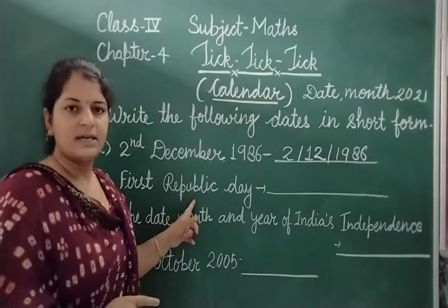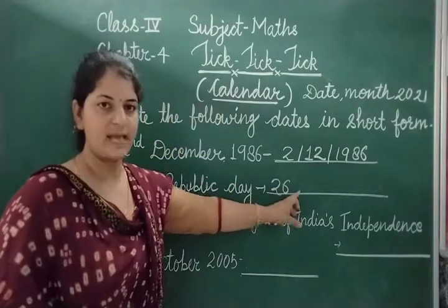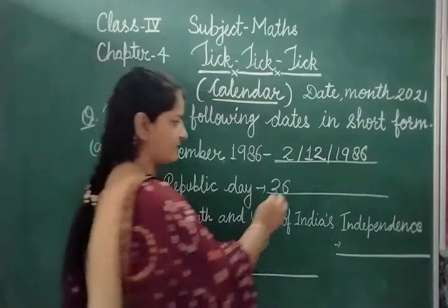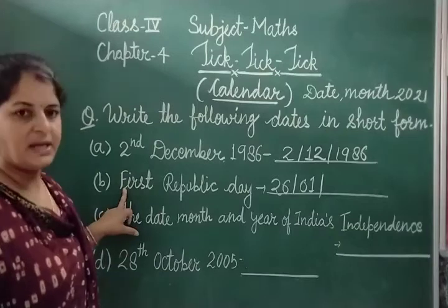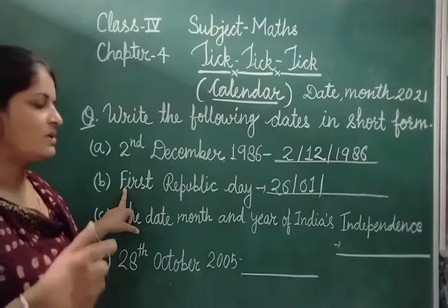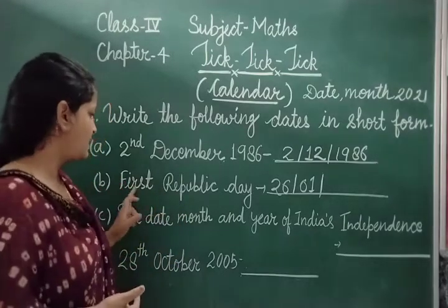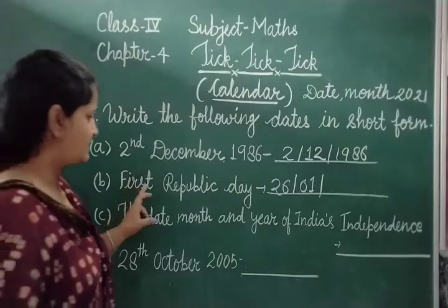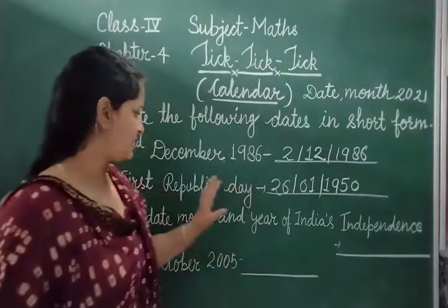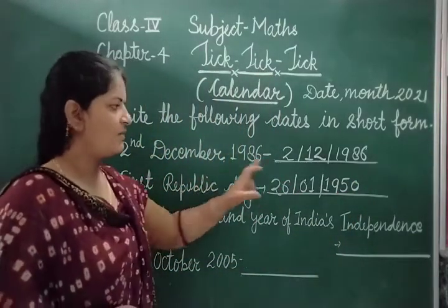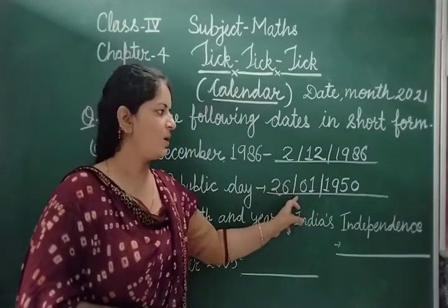Now Republic Day is simple — it is 26 January. January is the 1st month. And the first Republic Day — when India became a Republic — was in 1950. So the short form is 26/1/1950.